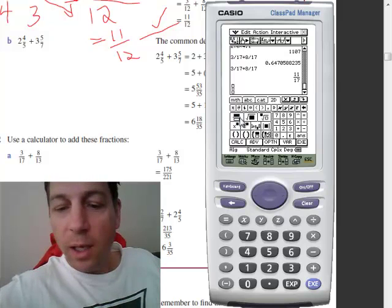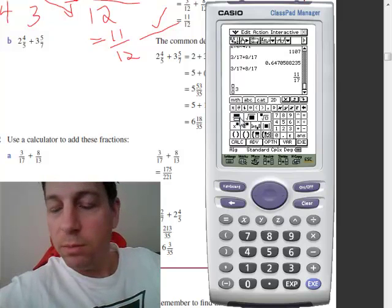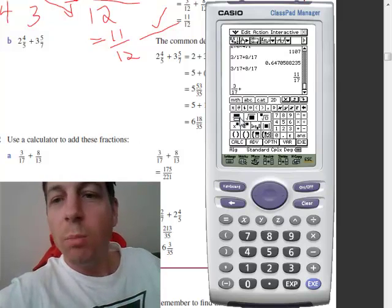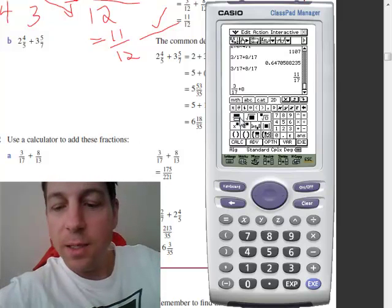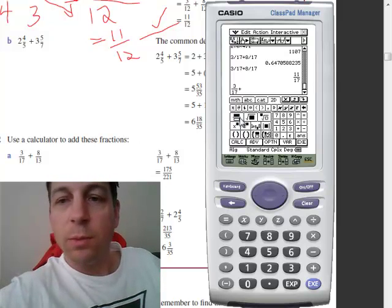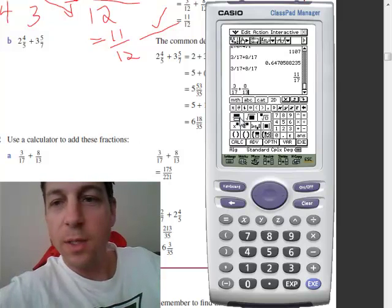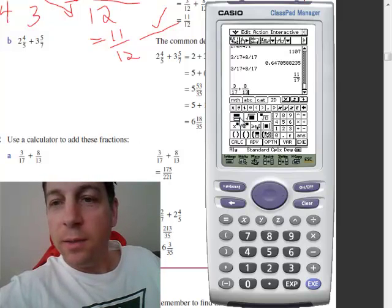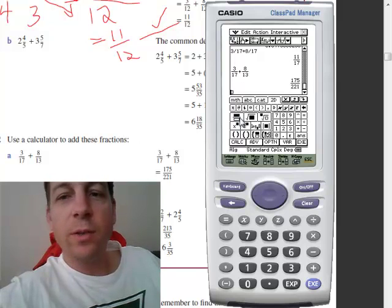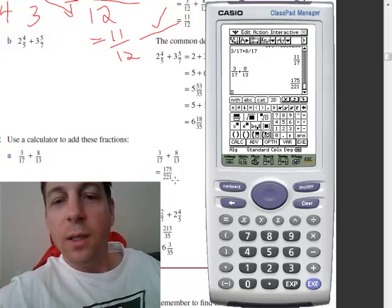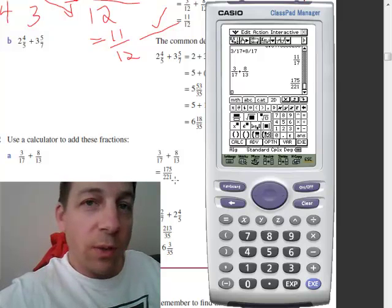Click on the fraction button and I can type in 3 over 17 plus 8. Push the fraction, 8 over 13, enter. I'll get 175 over 221, just like here. If you want to use your scientific calculators,